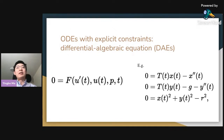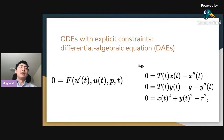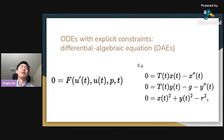In the engineering setting, we want to use ordinary differential equations with explicit constraints — in other words, differential algebraic equations — which is simply a possibly non-linear relation between the derivative, states, parameters, and time. For instance, the pendulum equations from before are precisely in this form.